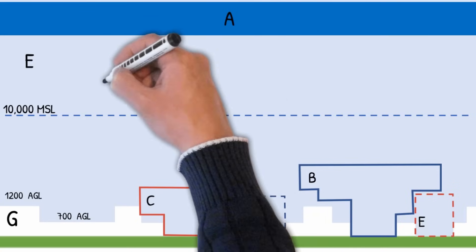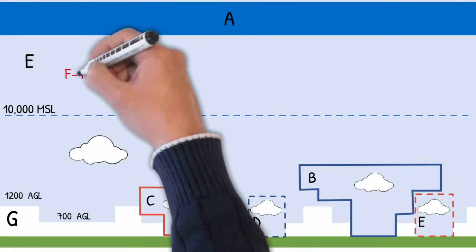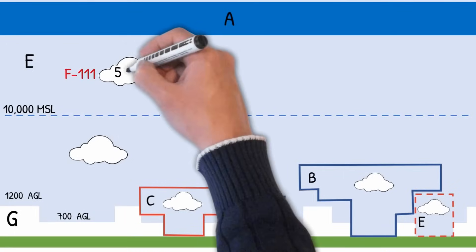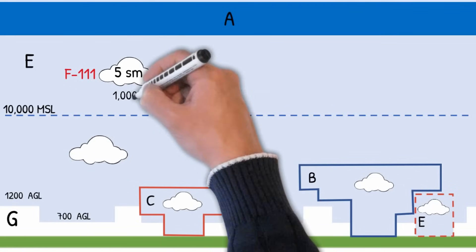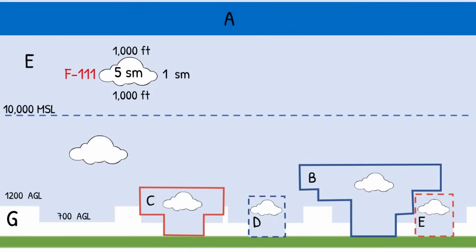Let's add a few clouds because we're going to talk about our visibility and cloud clearance requirements. We'll talk about Class E airspace above 10,000 feet MSL — and remember, I said to remember F-111. So above 10,000 feet MSL, your visibility requirement is five statute miles, while cloud clearance requirements — these are where the ones come from in the F-111 — are 1,000 feet below, 1,000 feet above, and one statute mile horizontally. F-111 is five-mile visibility, 1,000 below, 1,000 above, and one statute mile horizontal.